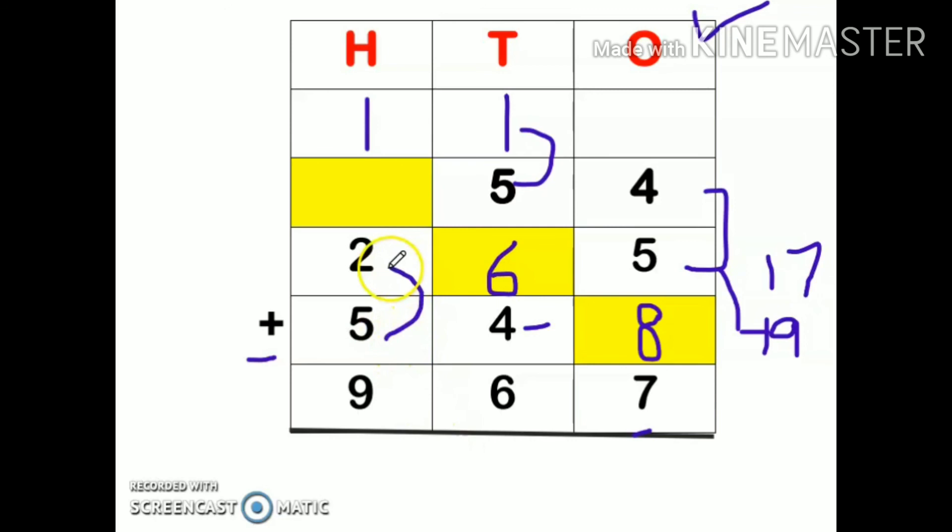Now 5 plus 2 is 7, 7 plus 1 is 8, but my answer is 9 so I will add 1. So 1, 6, and 8 are my missing numbers.